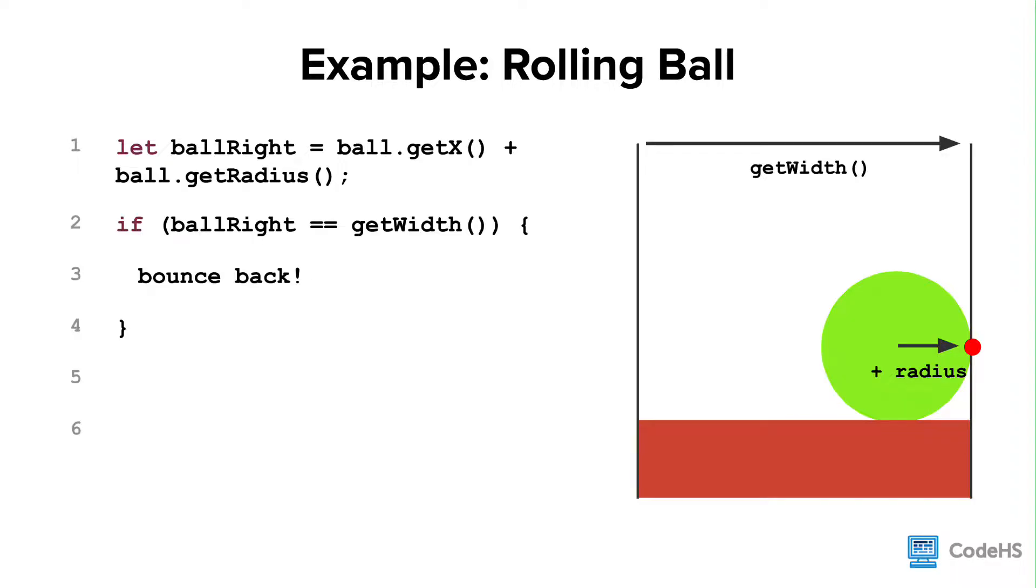So let's write, if ball right equals get width, then bounce back. The only challenge here is that it will be very rare that the right side of the ball will be exactly equal to the width of the canvas, since it is likely moving more than one pixel at a time.